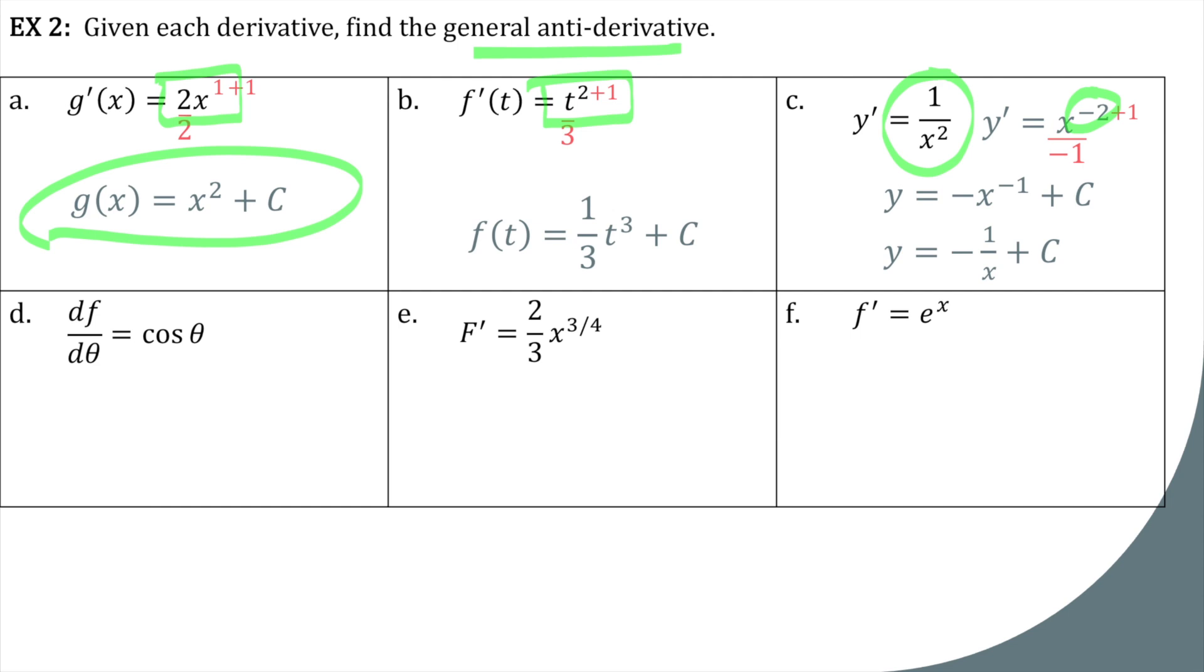Now before we move on, do you notice that the front of all these has a different notation. g'(x), f'(t). This one just says y'. This one says df/dθ. These are all just saying that these are derivative functions. So if the derivative of a function is cosine theta, the antiderivative is sine theta plus c. Same process, just looks messy with fractions, doesn't it?